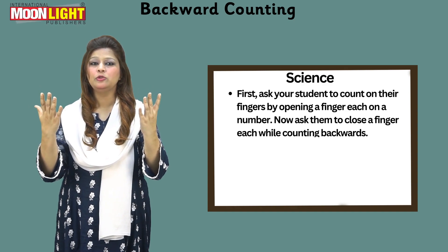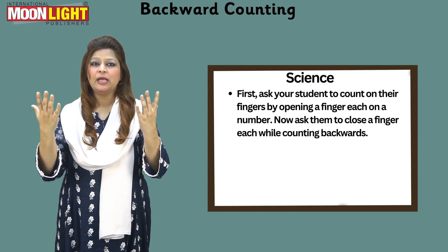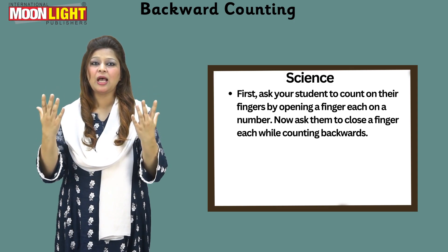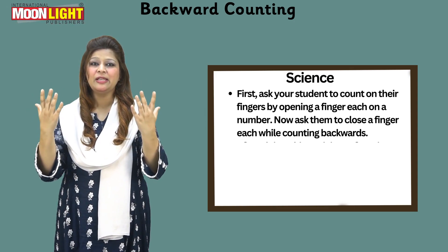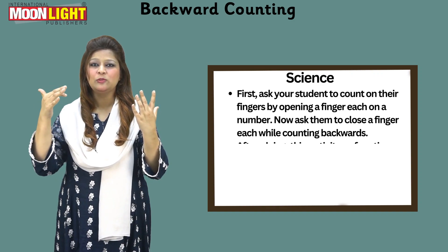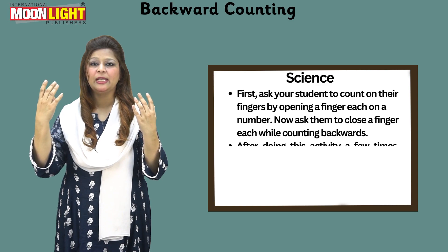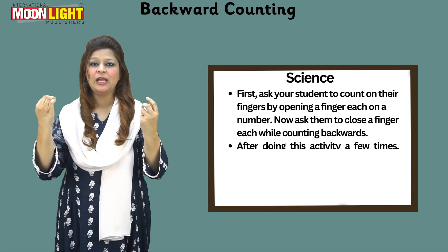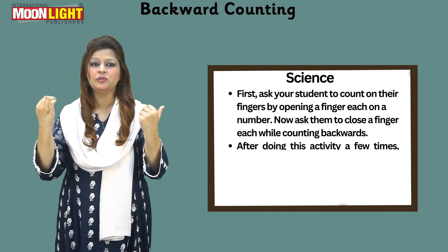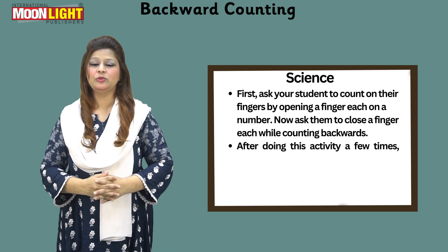Now when they are going to do counting backwards, they are going to close a finger for each number counting down from 10. For example, they are going to say: 10, 9, 8, 7, 6, 5, 4, 3, 2, 1. In this way, the students are going to do the activity.